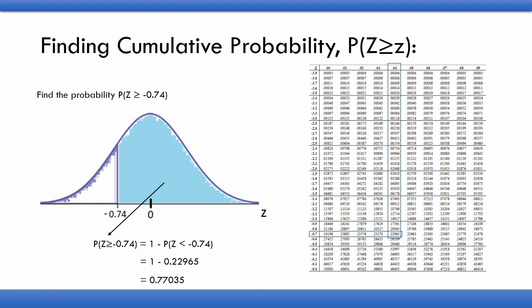In general, if you want to find the area to the right of a Z-score, find the area to the left of that Z-score and subtract it from 1, and you will get the required area to the right.